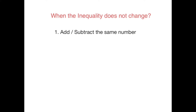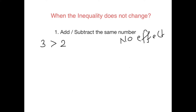Adding or subtracting the same number has no effect on the inequality — the inequality will not change. You can add a positive number, a negative number, a fraction — whatever you add or subtract, the inequality will remain the same. For example, take three is more than two and add one to both sides: three plus one versus two plus one gives four versus three, and the inequality still holds.